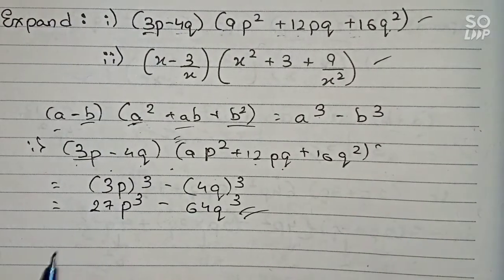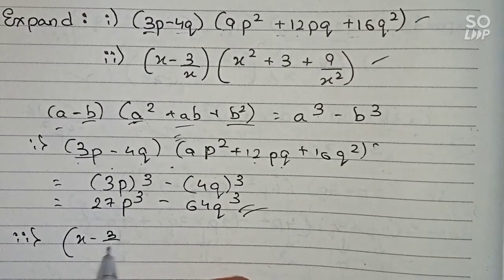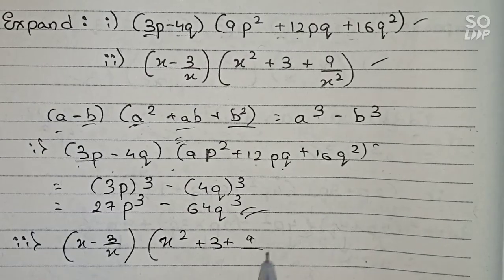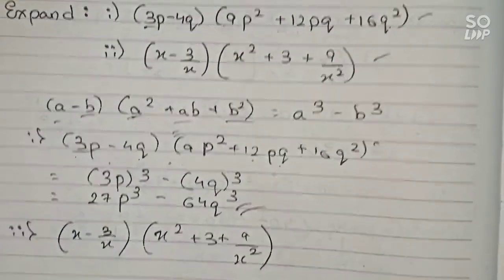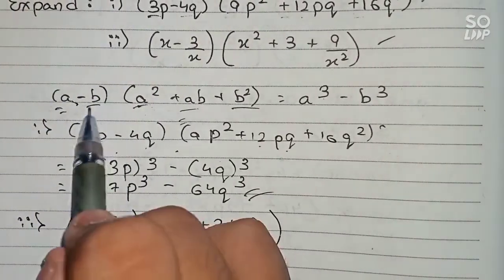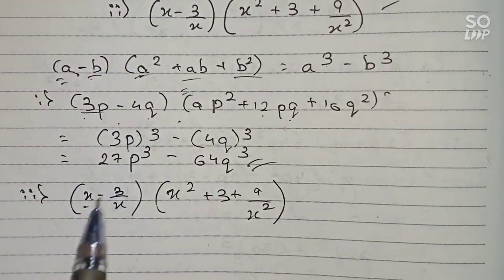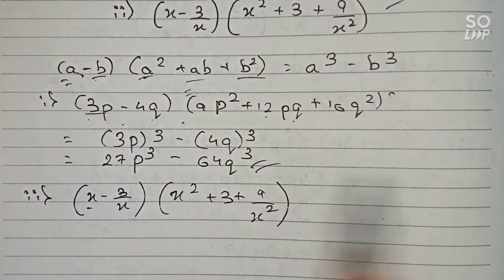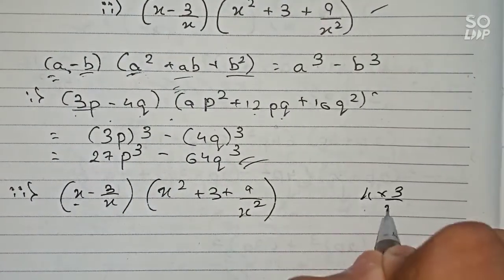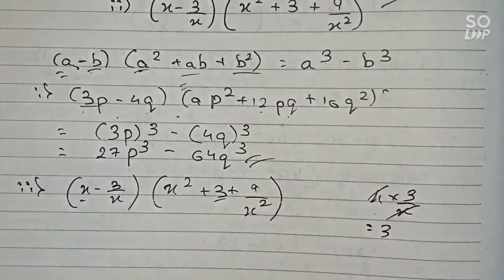Now let's move on to our next question. The next question says: (x minus 3 by x) multiplied by (x squared plus 3 plus 9 by x squared). In this question also we will check the identity format. Here a equals x and b equals 3 by x. So a squared is x squared, and ab means x into 3 by x — x and x cancel — leaving 3.